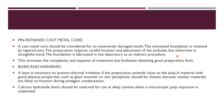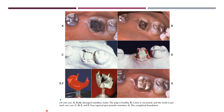Coming to varnishes and bases — these are important because they prevent thermal irritation if the preparation extends close to the pulp. A material with good physical properties such as glass ionomer or zinc phosphate could be chosen. Calcium hydroxide liner should be reserved for deep cavities. For a pin-retained restoration on a badly damaged molar with a healthy pulp: caries are excavated, the tooth is prepared for the cast core, four pin-retained restorations are placed, then casting and spruing is done in the lab, and finally a completed foundation is cemented.